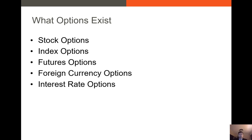So what options exist around the world? This is by no means a comprehensive list, but we have stock options — most of these are going to be American options. We have index options, also American options. Futures options, so options on futures contracts. We have currency options and interest rate options. All of these have a strike price. For stocks it's the actual underlying stock price; for currency options it's a specified exchange rate; for interest rate options your strike price is a certain interest rate.